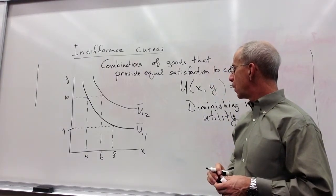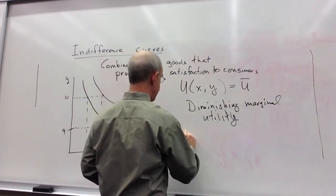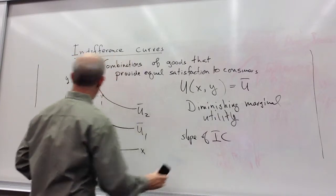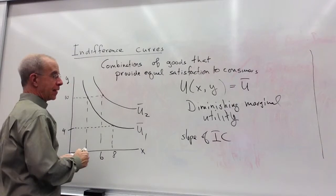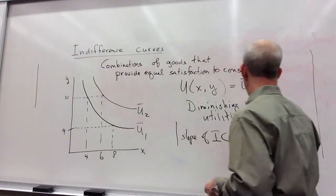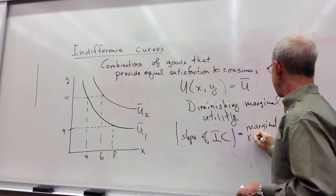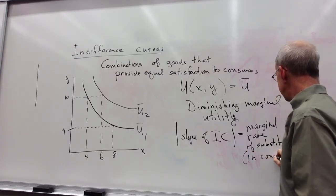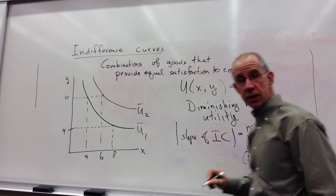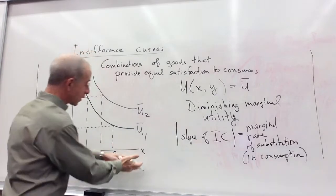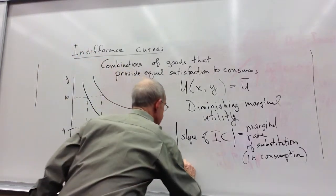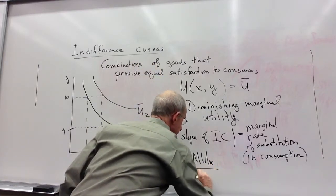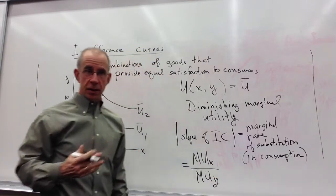The slope of an indifference curve, which is the marginal rate of substitution in consumption, that is the substitutability between these two goods in consumption, that slope of the indifference curve with x on this axis and y on this axis is the marginal utility of x divided by the marginal utility of y.